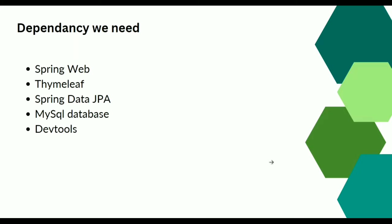The next dependency is Spring Data JPA. JPA stands for Java Persistence API, which is basically an ORM tool — Object Relational Mapping. The ORM tool acts as a bridge between the application and the database. When we store an object into the database, we give that object to the ORM, and ORM converts it into SQL queries and saves it into the database. We don't need to write any SQL queries. When we fetch any row from the database, ORM converts it into an object and returns it back to us. We are also going to use the MySQL database dependency.